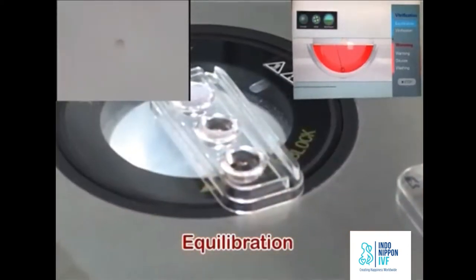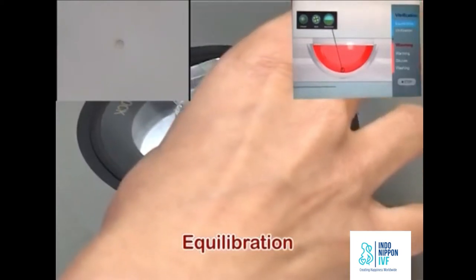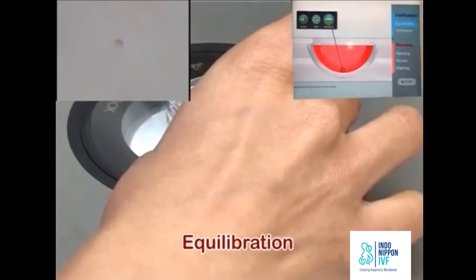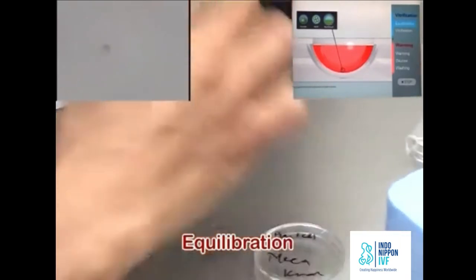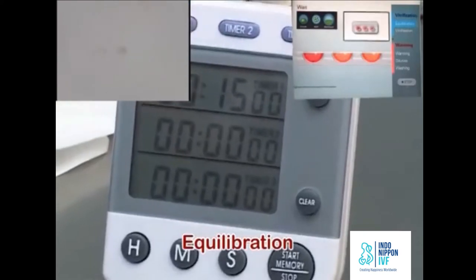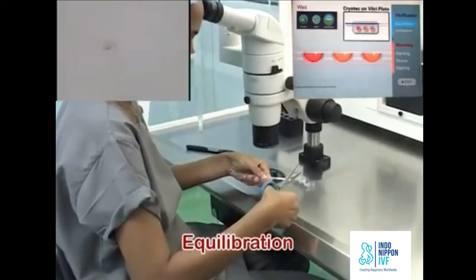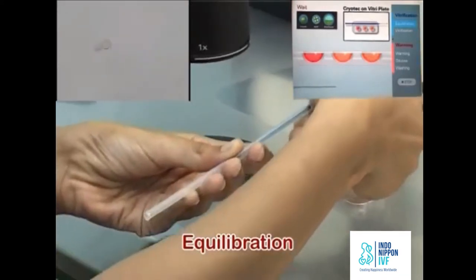As the oocyte sinks to the bottom, it will shrink. Put the lid back on the plate and wait for the recovery of the shrinkage. When the oocyte volume is completely recovered, it is the end of this step. Oocyte equilibration is complete when the width of the perivitelline space becomes equal to the width before immersing into ES.